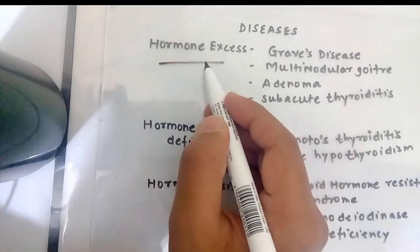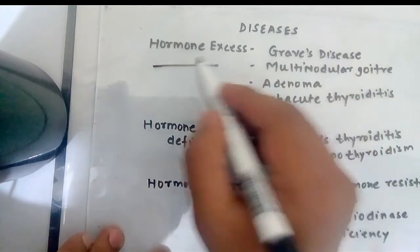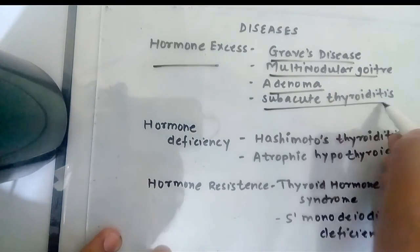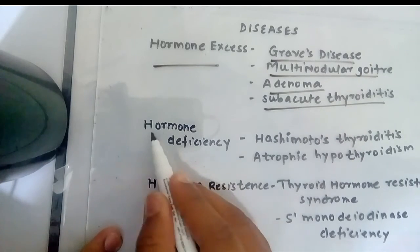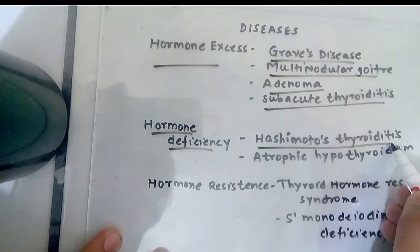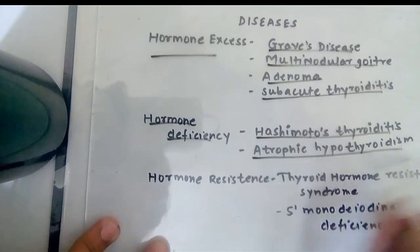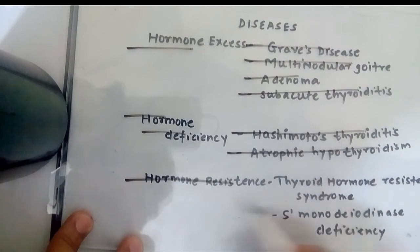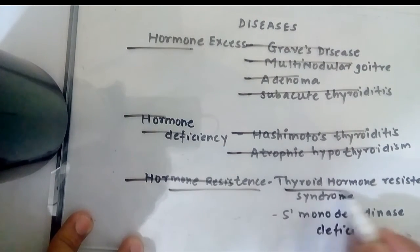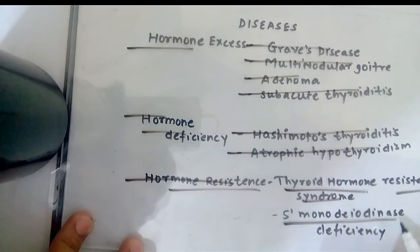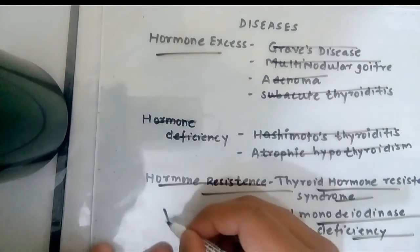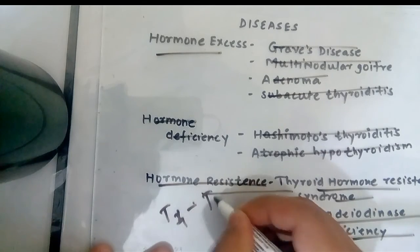If T3 and T4 is more in the blood, it is hormone excess. It causes Grave's disease, multinodular goiter, adenoma, and subacute thyroiditis. If it is decreased, it also causes Hashimoto's thyroiditis and atopic hypothyroidism. There are some conditions in which the body is resistant to the thyroid hormone. These are thyroid hormone resistance syndrome and monodeiodinase deficiency, which converts T4 to T3.